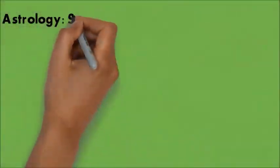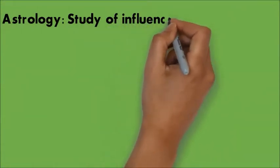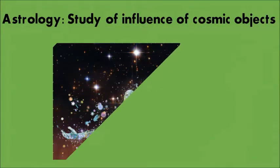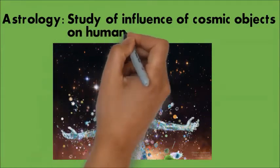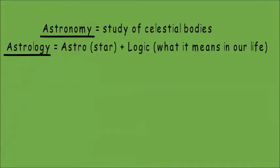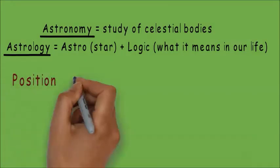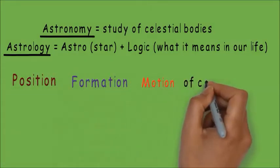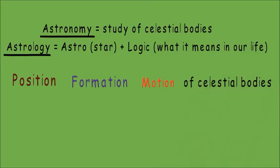Astrology is a study of the influence that distant cosmic objects, usually stars and planets, have on human lives. In both astronomy and astrology, we study the position, formation and motions of celestial bodies like planets and stars.